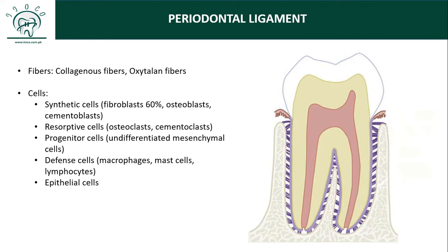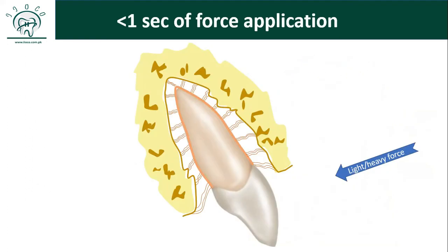The third component of all connective tissue is tissue fluid. Yes, the periodontal ligament is also a fluid-filled chamber. Apart from that, it also has neural and vascular components.